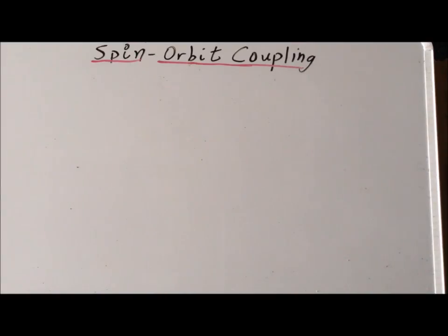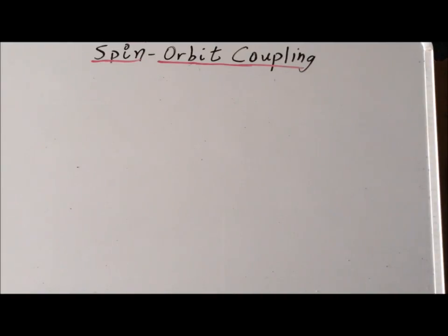Hello. In this video, we are going to develop expressions for the energies of the various J levels that result from spin-orbit coupling in two special cases. The first special case is p1, where we have one electron in a p orbital, and the second case is d1, where we have one electron in a d orbital.